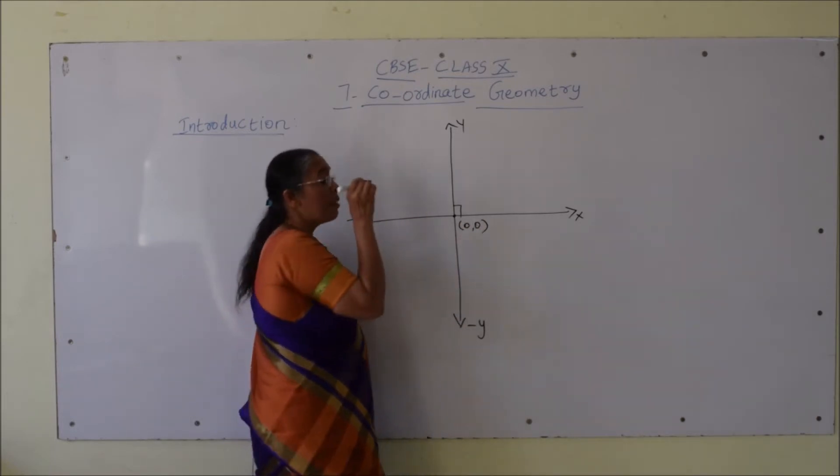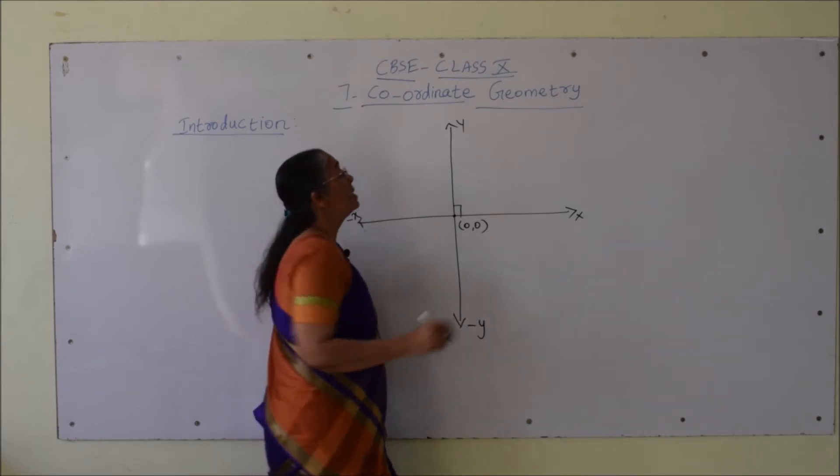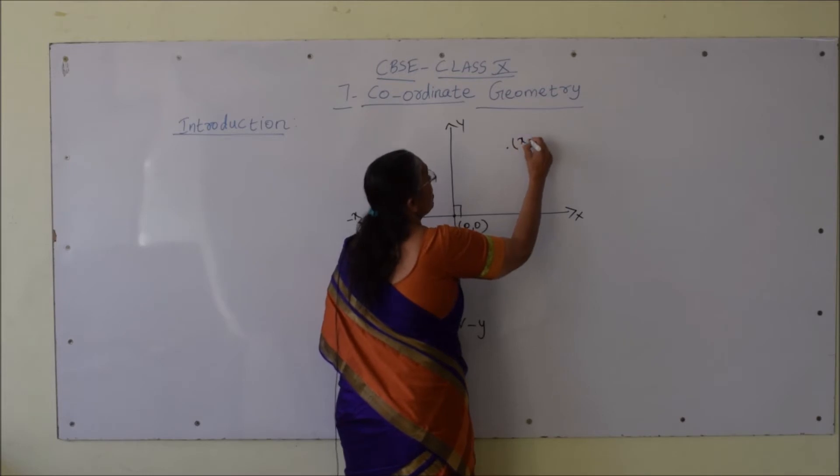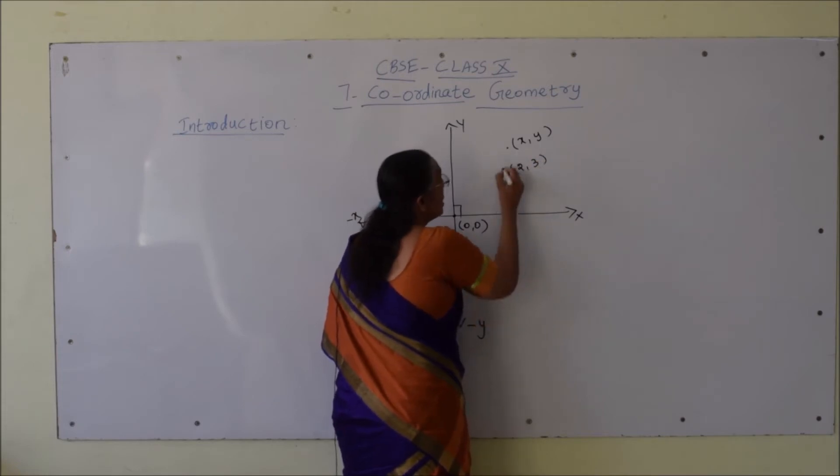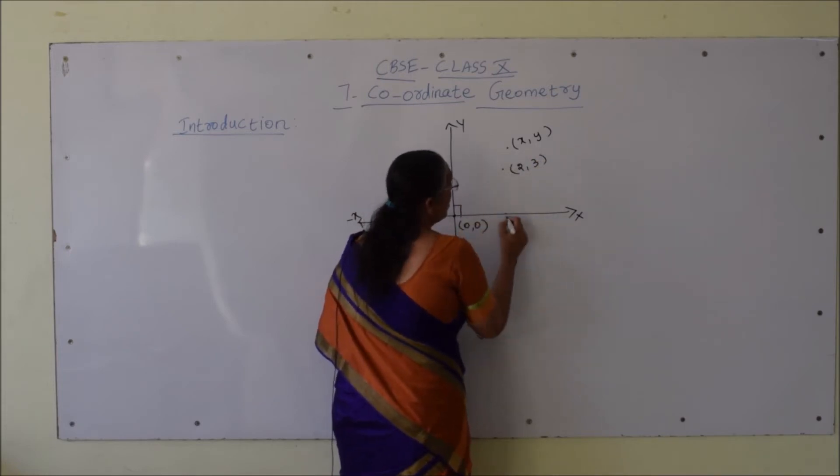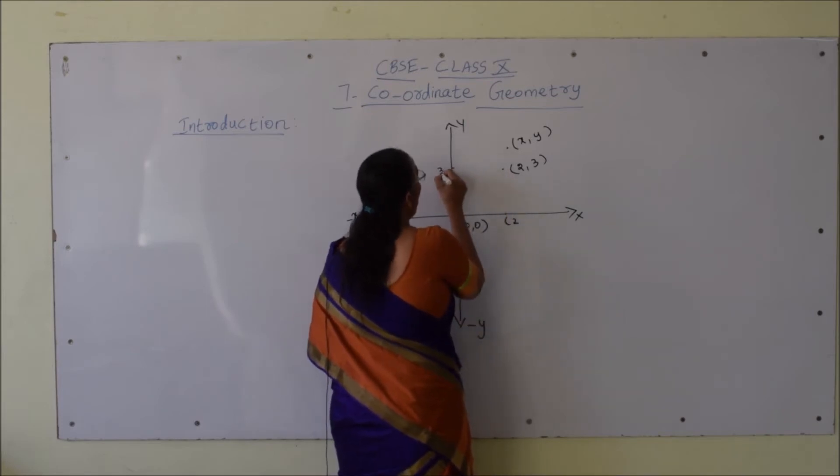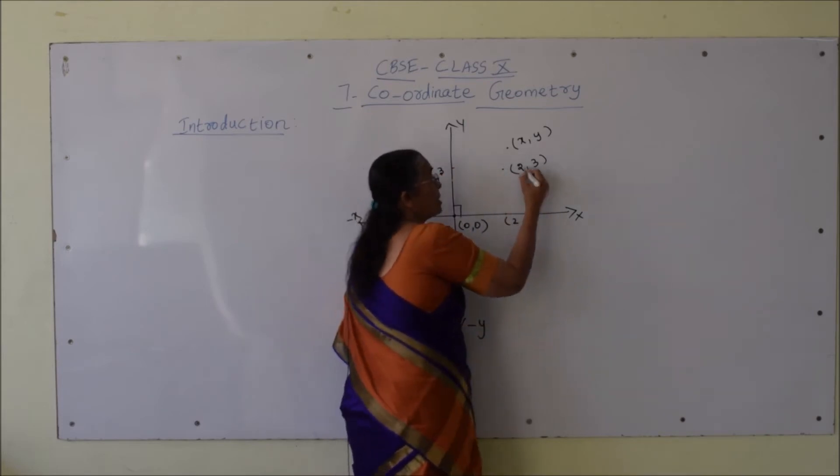Every point in the plane is determined by coordinate pairs (x, y). For example, the point (2, 3) means 2 is the distance on the x-axis and 3 is on the y-axis. These are called the abscissa and ordinate respectively.